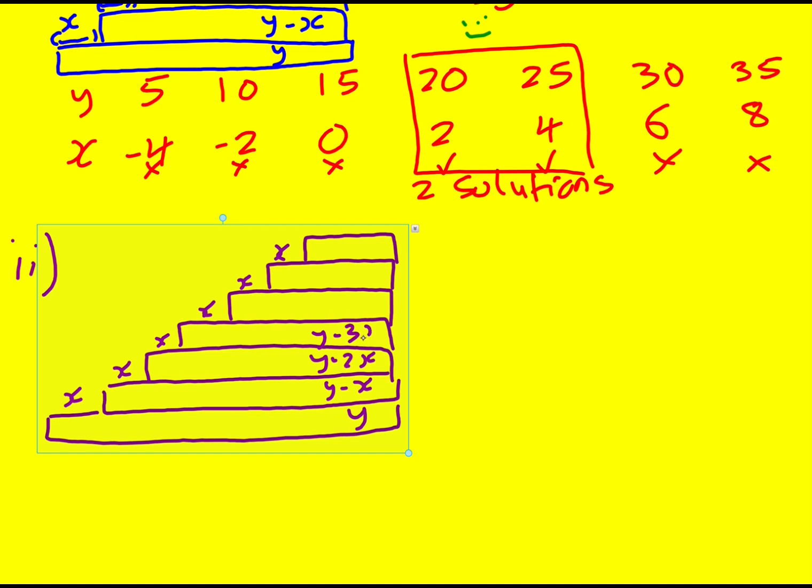This works out in the same kind of way. But now I've got this extra y minus 6x. When I add them all together, I'm going to get 7y minus 21x equals 90.